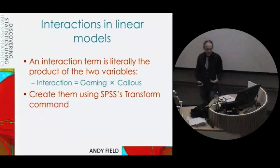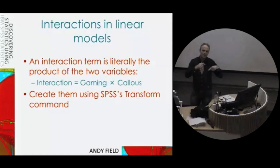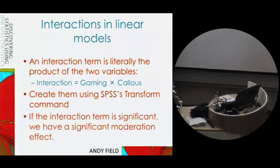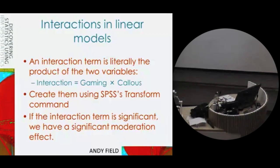If you wanted to do this manually, you could use the Compute function in the Transform menu to create a new variable by multiplying the two predictors together. If that interaction term is significant, then you have a significant moderation effect. The reason I'm flagging all of this is because when we start talking about experimental designs, we're going to talk about interactions a lot — this is just a way into that, so you understand that an interaction term is testing this idea of moderation.